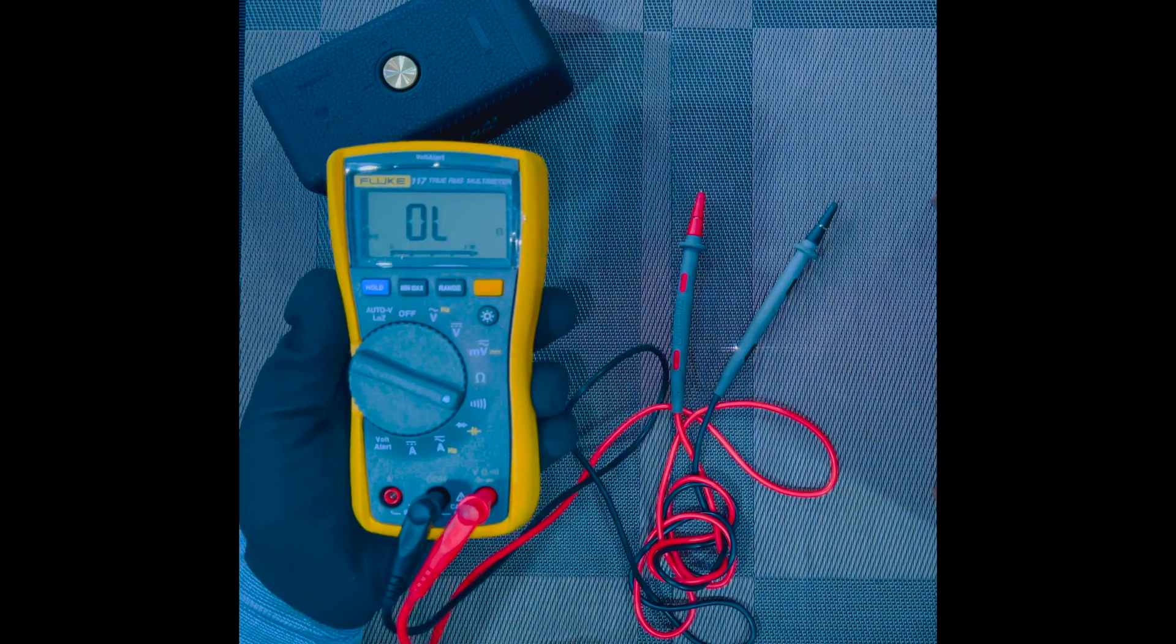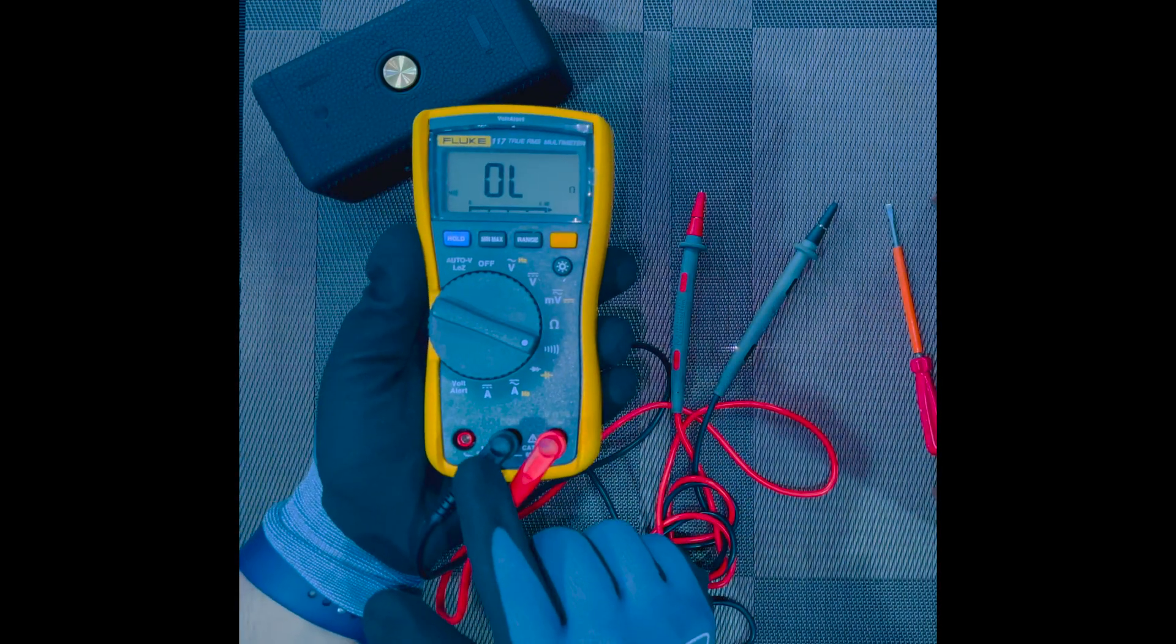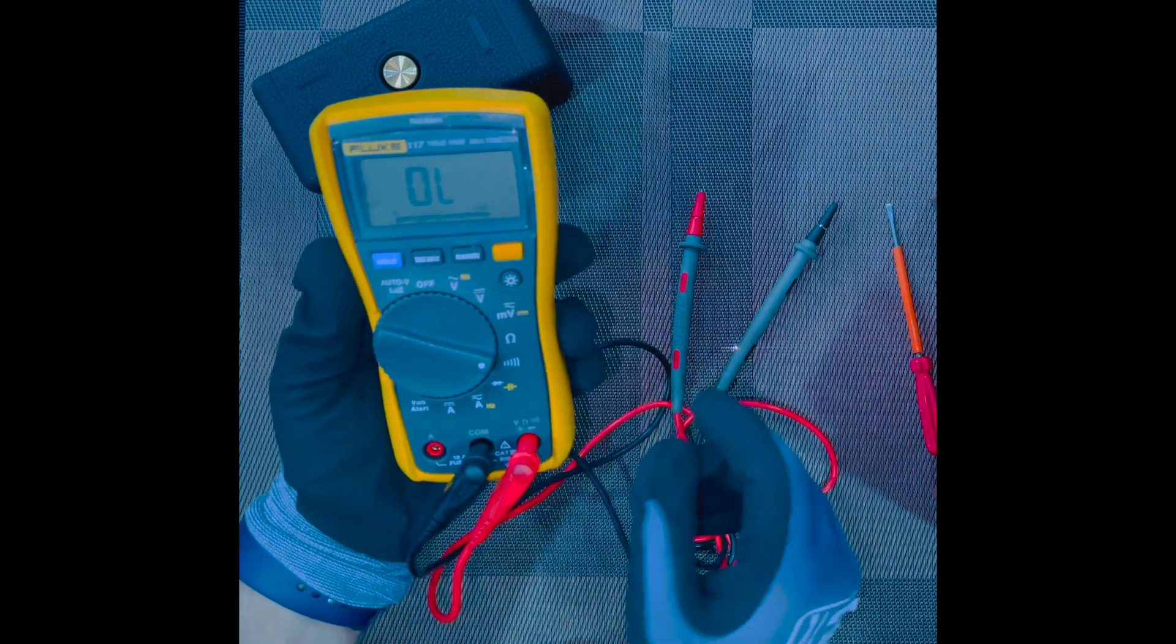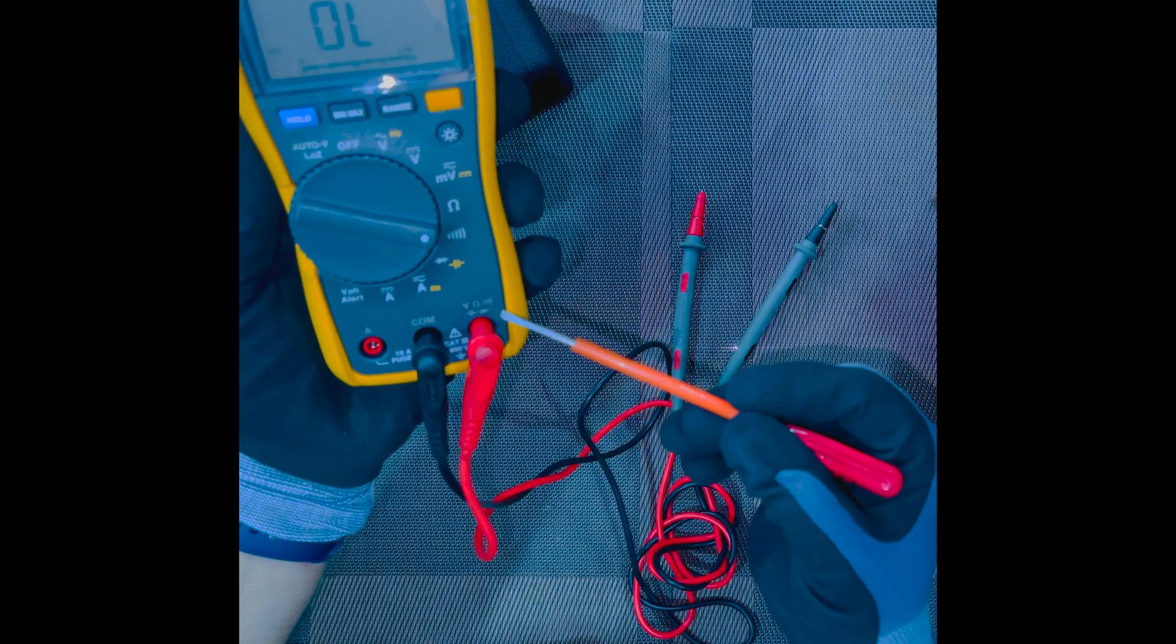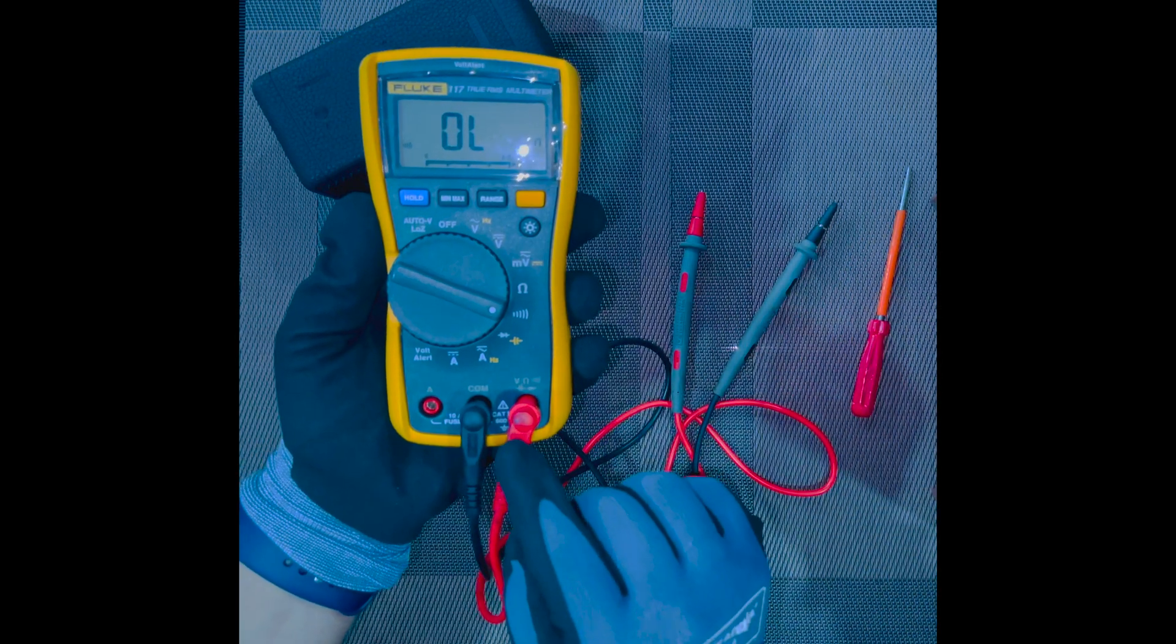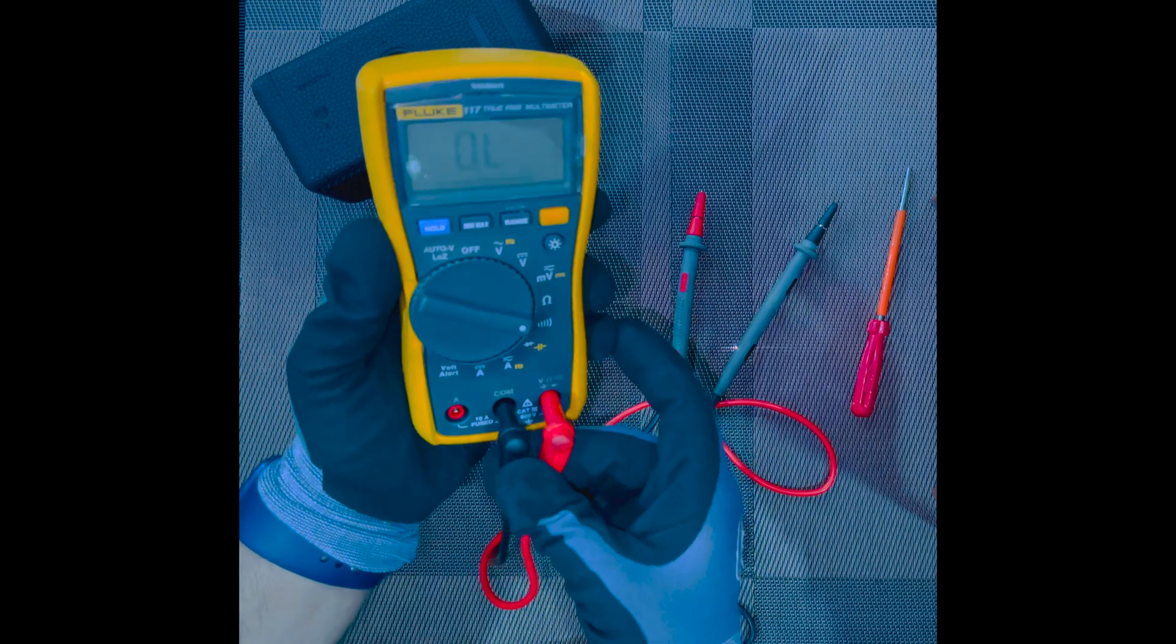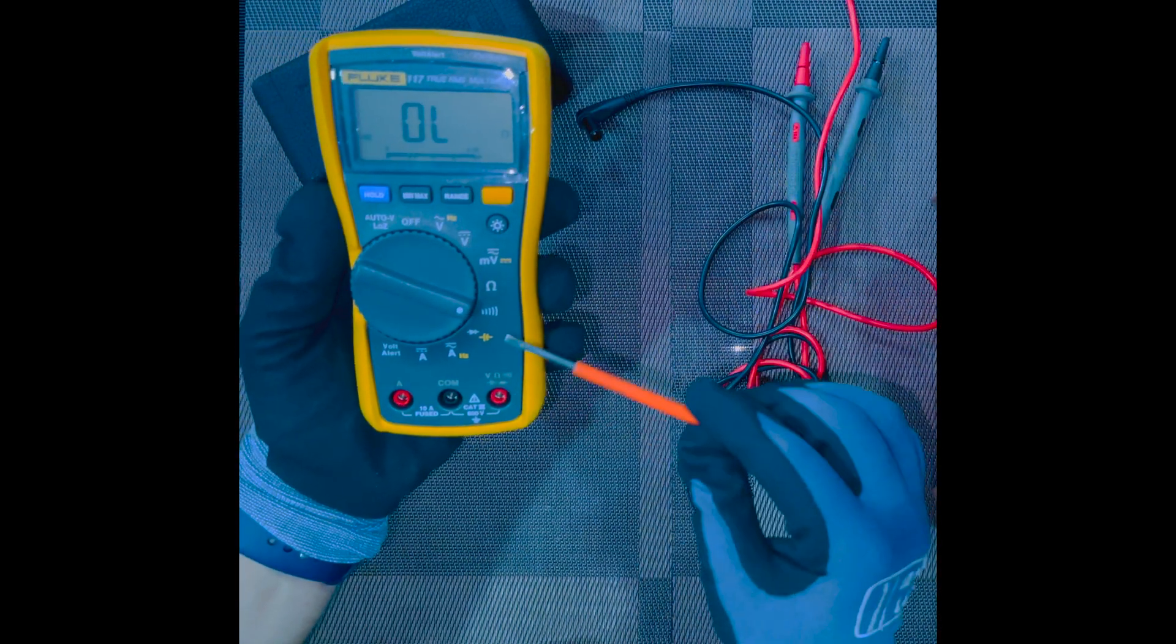Probes have to be connected in such an order: the black probe should be connected in the common port and the red probe should be connected in the continuity port. You see this continuity sign right here, so that means the red part has to come on the continuity port and black one in the common port. This completes the continuity section.